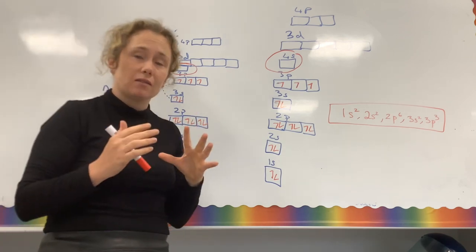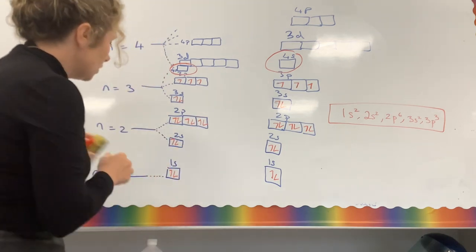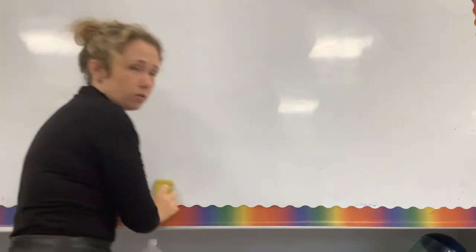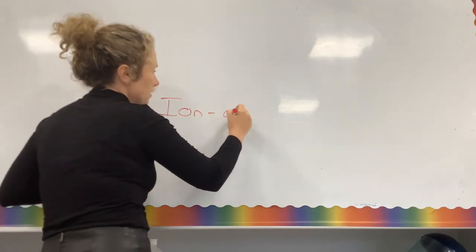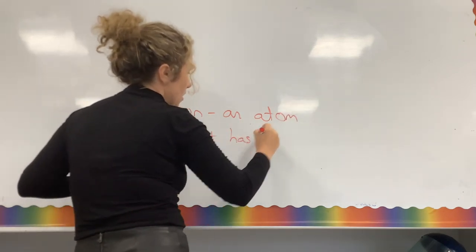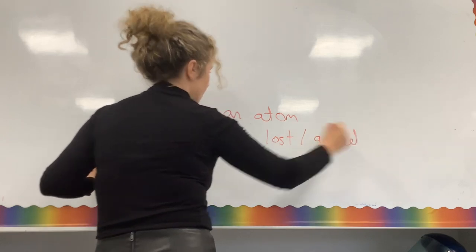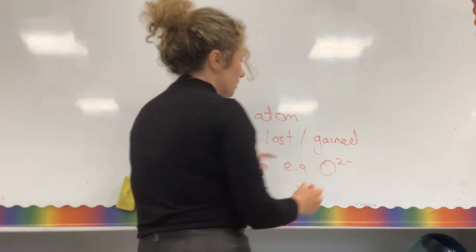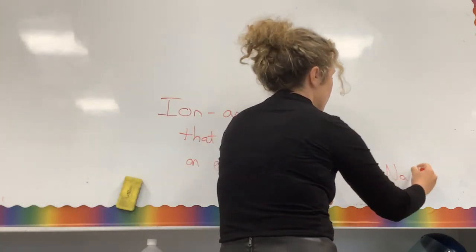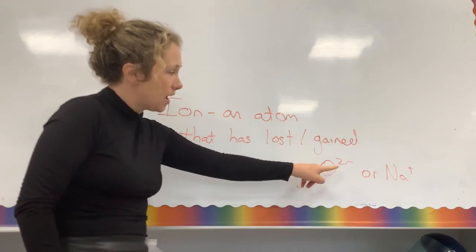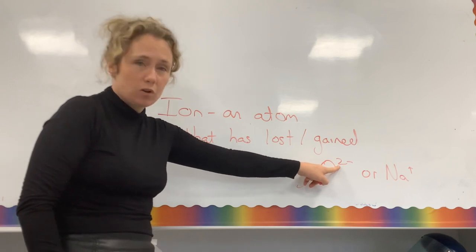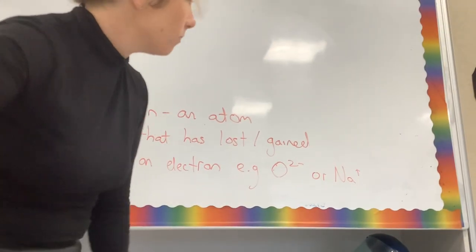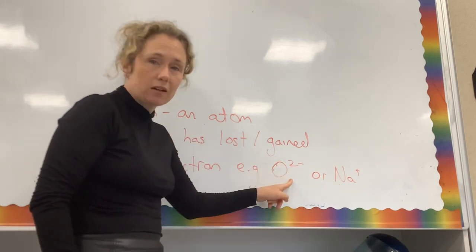Ions are atoms that have a charge — they've either lost or gained an electron from one of their electron shells. The definition of an ion is an atom that has lost or gained an electron. For example, O²⁻ means oxygen has gained two electrons and become two-negative. Na⁺, which is in group one, has lost one electron and become positively charged.